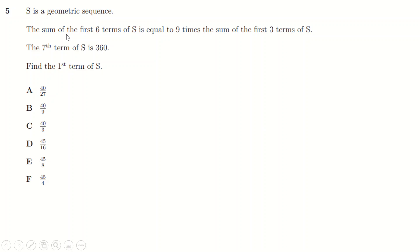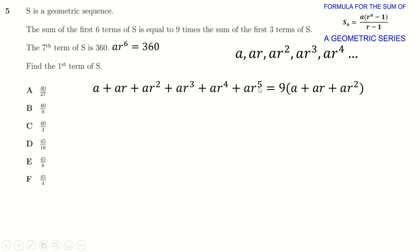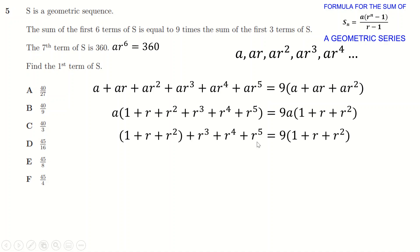Question five: this is a geometric series where you multiply by r to get the next term. The sum of the first six terms equals nine times the sum of the first three terms, and the seventh term is 360. Rather than using the formula immediately, I write out the six terms explicitly equal to nine times the first three terms.